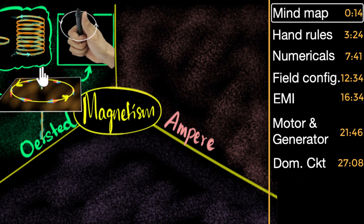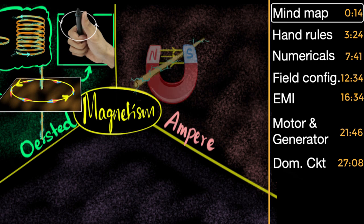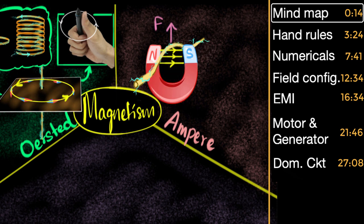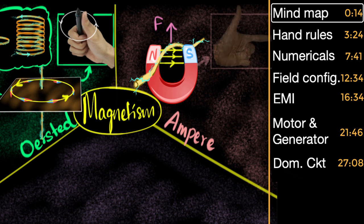That brings us to Ampere. He was saying: if a current carrying wire can push a magnetic needle and deflect it, maybe the opposite can also happen — maybe a magnet can also push and deflect a current carrying wire. And that's exactly what he proved with his experiment. He passed current through a wire placed inside a magnetic field and found that the wire deflected; there was a force experienced by the wire. To remember the direction in which the force acts, you use your left hand — this is where Fleming's left hand rule comes into the picture.